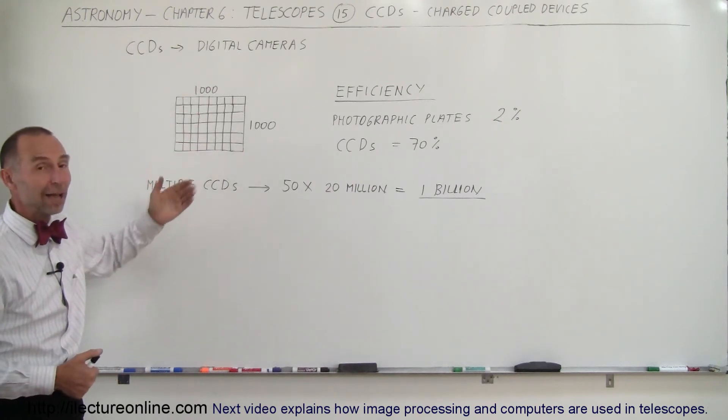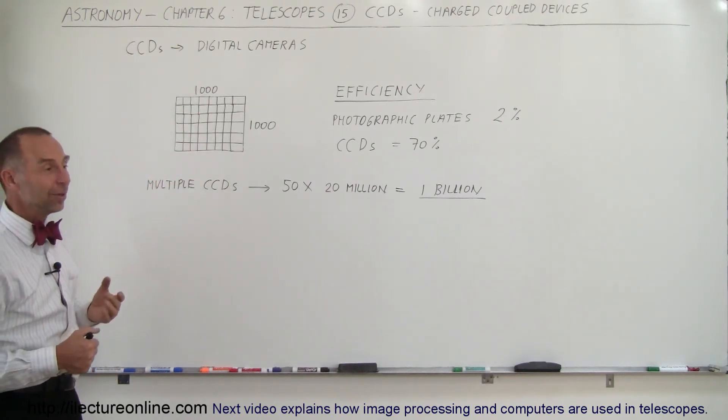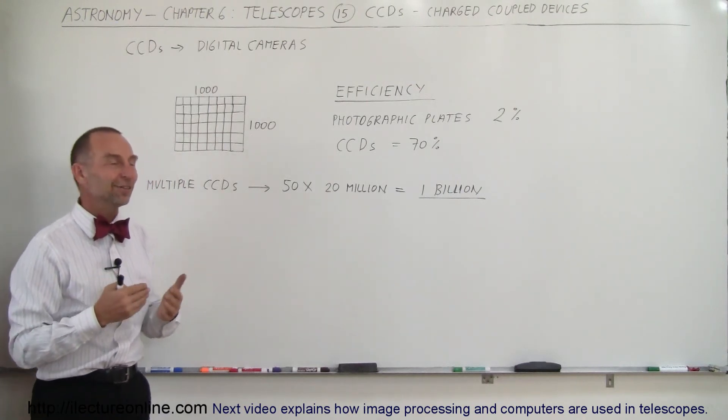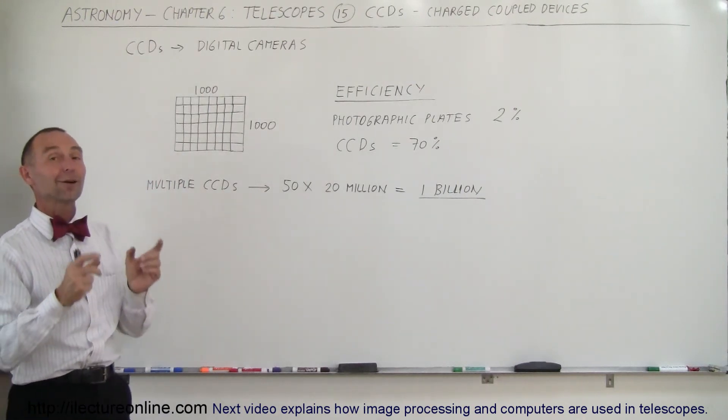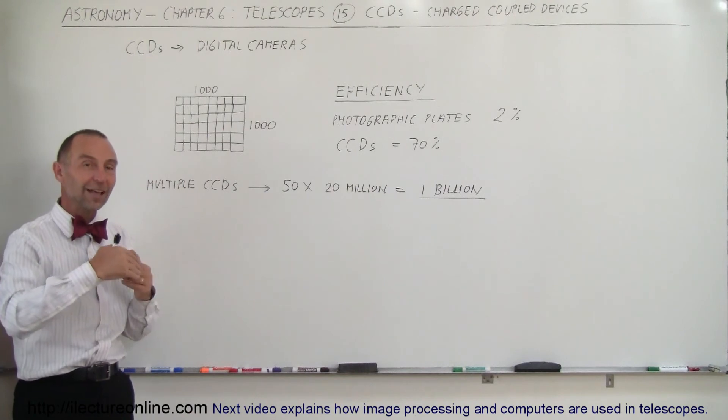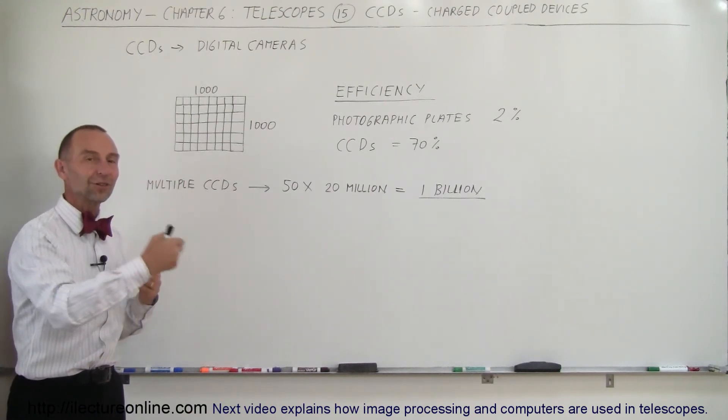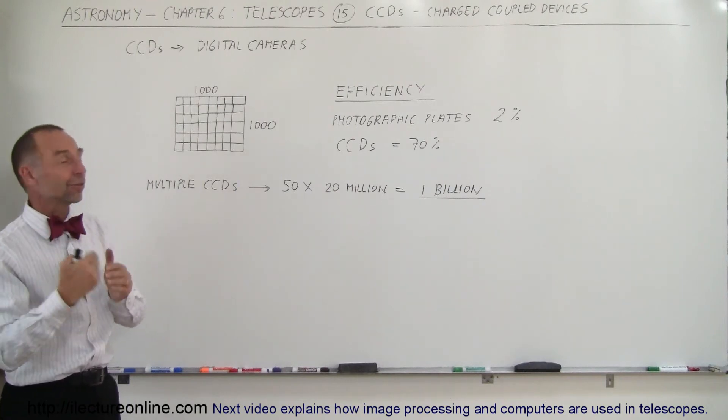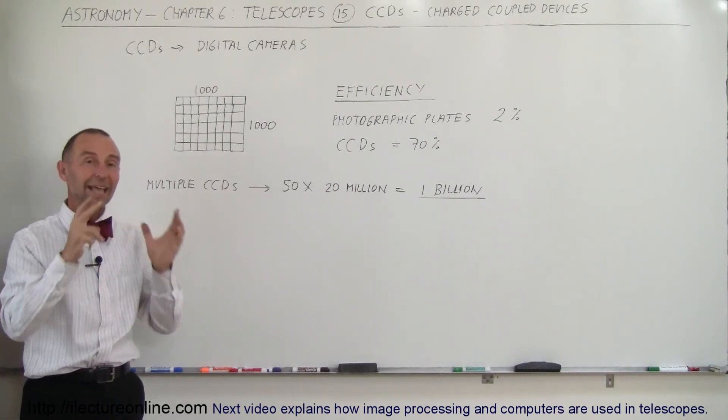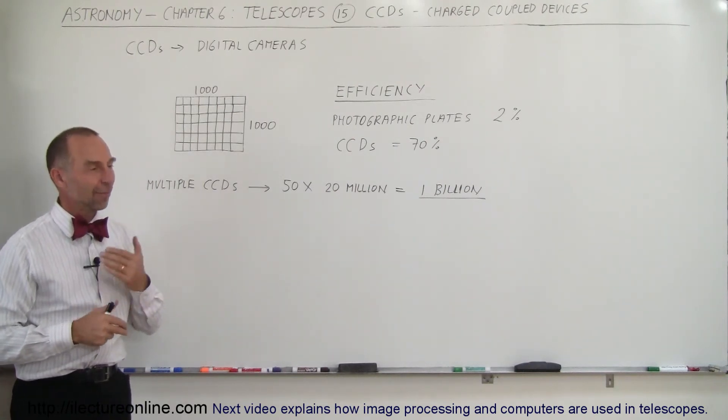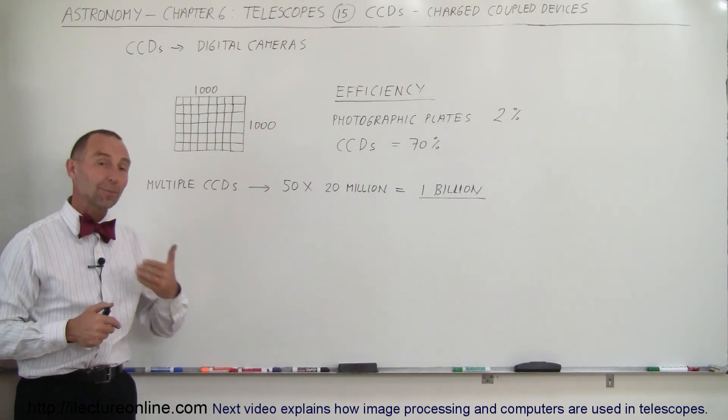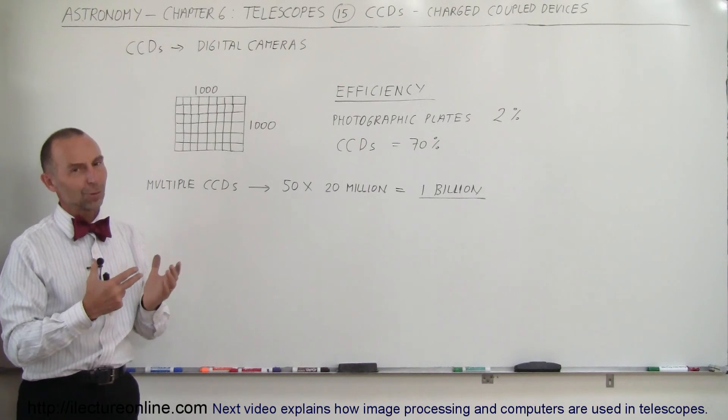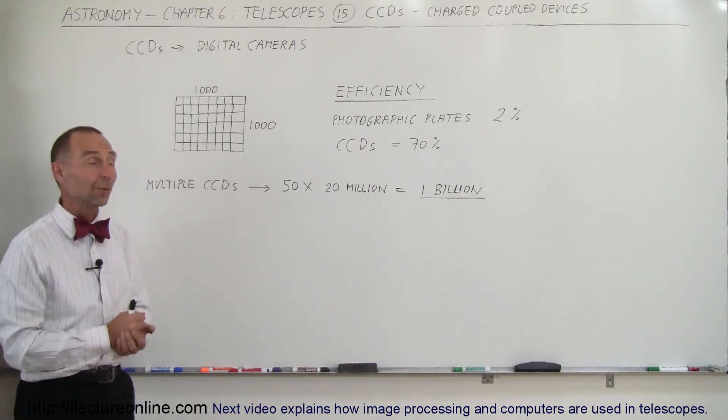It started with very primitive types. The first ones they put up on the Hubble were primitive compared to what we have currently in our modern-day cell phones. We can take better pictures with our cell phones than the Hubble could with its initial CCDs based on the pixels. Of course, they've gone up there several times, replaced with up-to-date CCDs and optics, so they're much more powerful now than in the beginning.